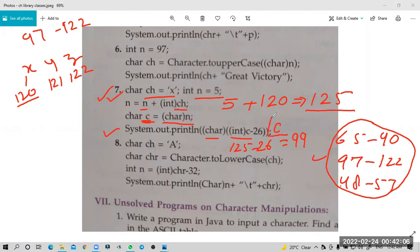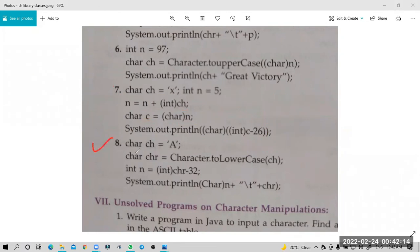Question eight: ch equals 'A', ASCII value 65, converted to lowercase chr gives small a. Then n equals (int)ch minus 32, which is 97 minus 32 equals 65. 65 converted to character is capital A. Final answer is A, tab space, and a.